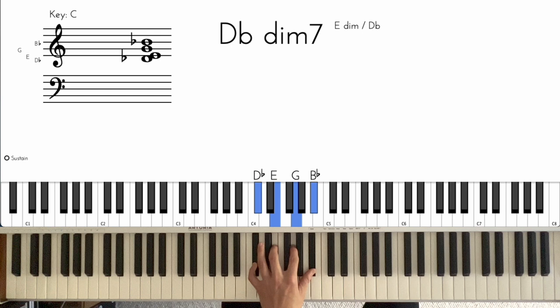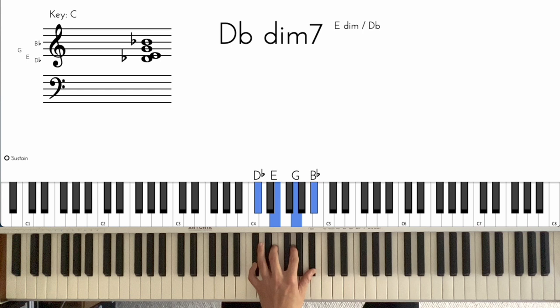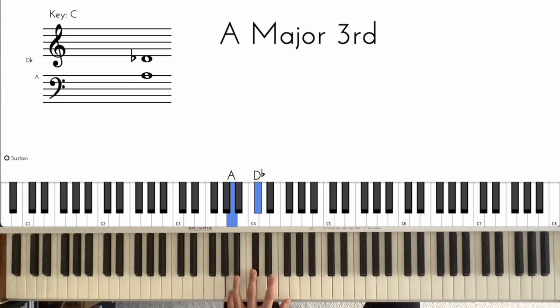Then we move this F down to an E. Play a diminished chord. Finishing with A7. Okay, so really slowly, all those chords in the left hand.